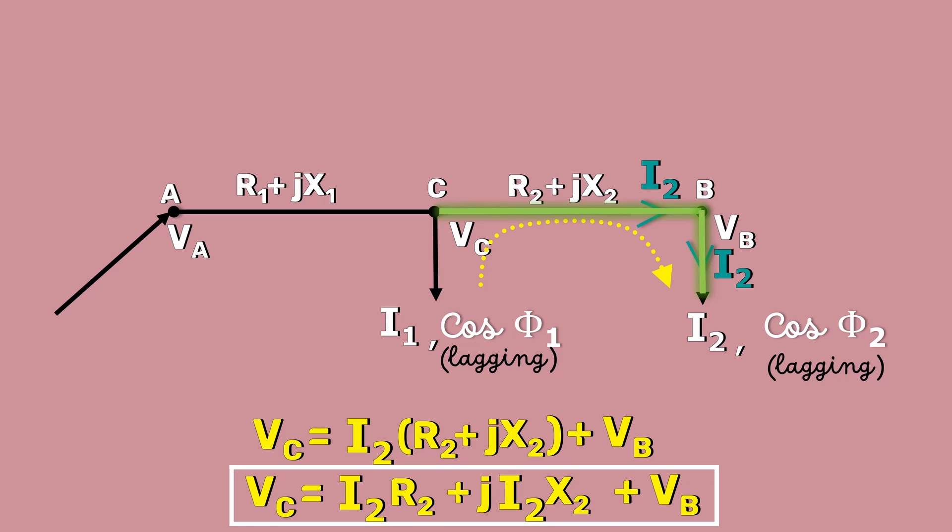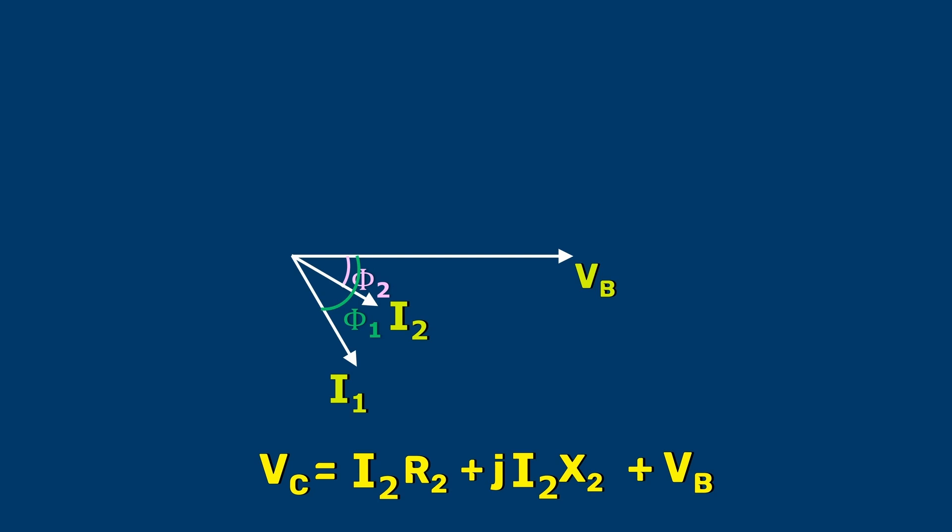Now, let's represent this VC in our vector diagram. Let's start with this I2R2. We already have I2 vector. When it is multiplied with a constant R2, its magnitude increases. Now, we have got our I2R2.